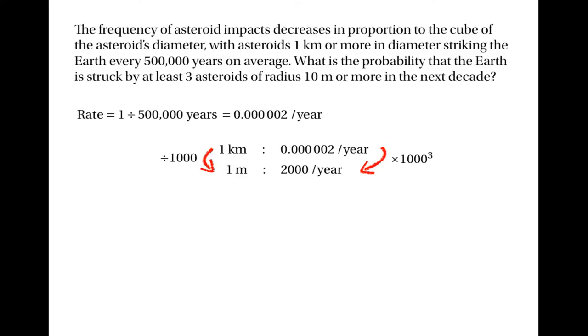Having worked out the rate for asteroids of diameter one metre, we can work out the rate for asteroids of diameter 20 metres. This is what we're interested in, because an asteroid of radius 10 metres will have a diameter of 20 metres.